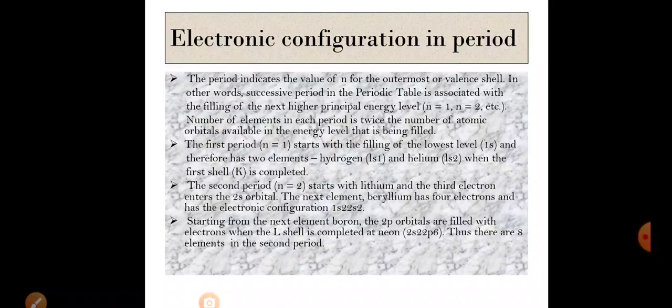First period: n=1, the K shell. Filling starts with the lowest level, 1s orbital. Since there is only one orbital (1s), the number of elements is 2 × 1 = 2 elements: hydrogen and helium. The second period: n=2, the L shell. Starts with lithium, whose third electron enters the 2s orbital (electronic configuration 1s² 2s¹). Beryllium has configuration 1s² 2s².